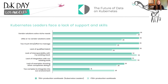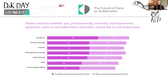The Kubernetes leaders face a different set of challenges, with a four-way tie for first place: vendor solution solving niche needs, little or no vendor solutions existing, too much time and effort to manage, and a lack of qualified talent. There's some crossover from all respondents, but a different ordering and level of concern for Kubernetes leaders. The talent gap was the most drastic difference when compared with all respondents, jumping 11%.